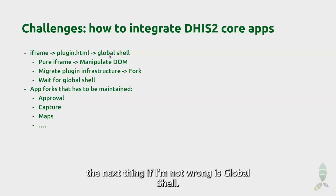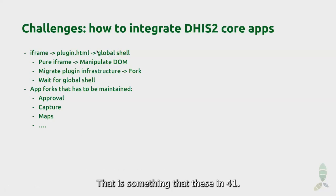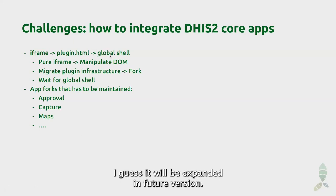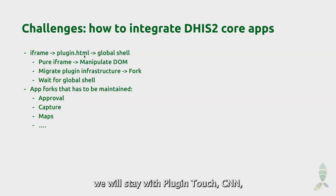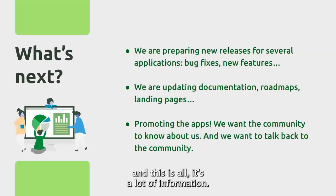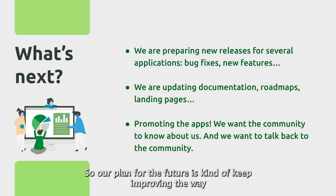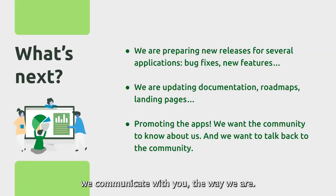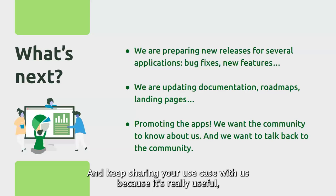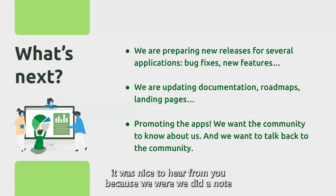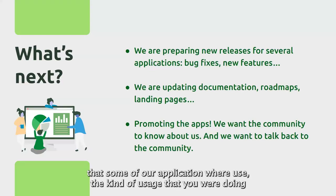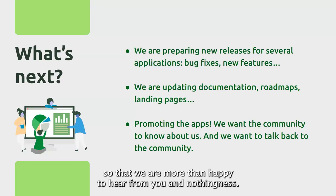The next step would be Global Shell, which is in DHIS 41 and will likely be expanded in future versions. But since most of our clients and the community are not on 41 yet, we will stay with plugin.html for now. That's everything — it's a lot of information. Our plan for the future is to keep improving the way we communicate with you, extend the applications, and keep sharing your use cases with us, because it's really useful to understand what is useful for you.